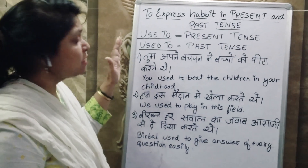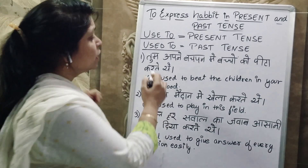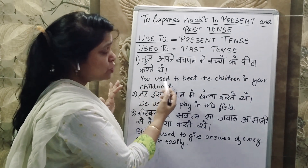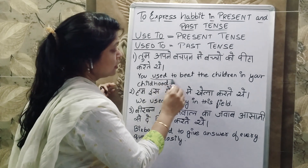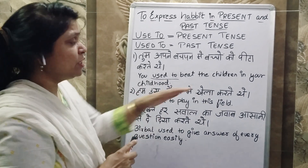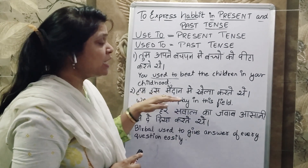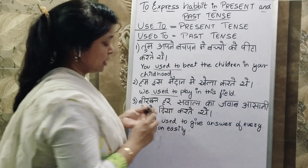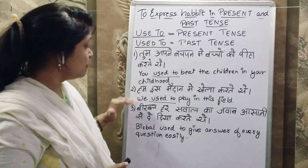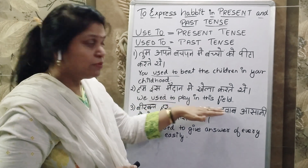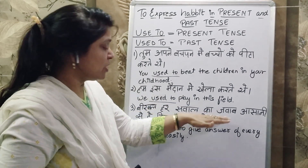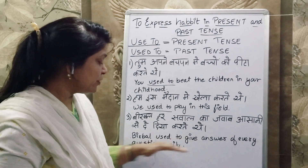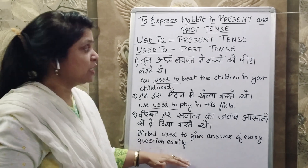And these are the sentences for your practice. You used to beat the children in your childhood. We used to play in this field. 'People, her sawaal ka jawab, asani se, diya karte thi' — People used to give the answer of every question easily.